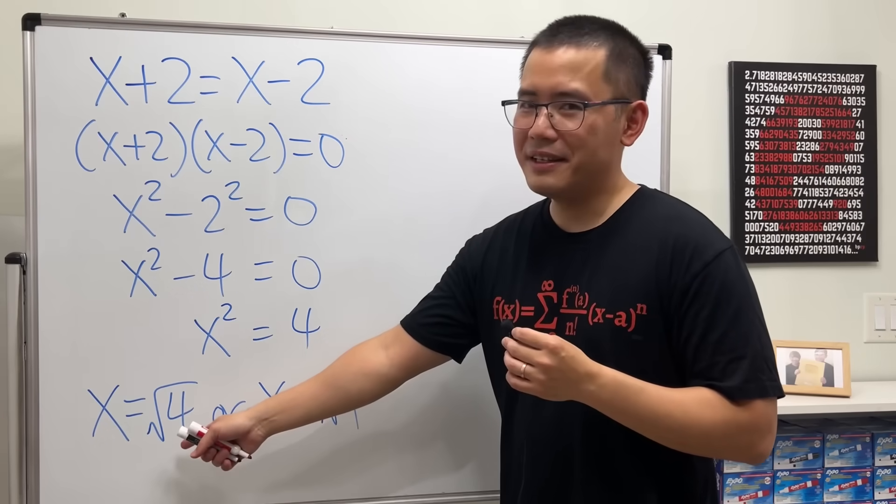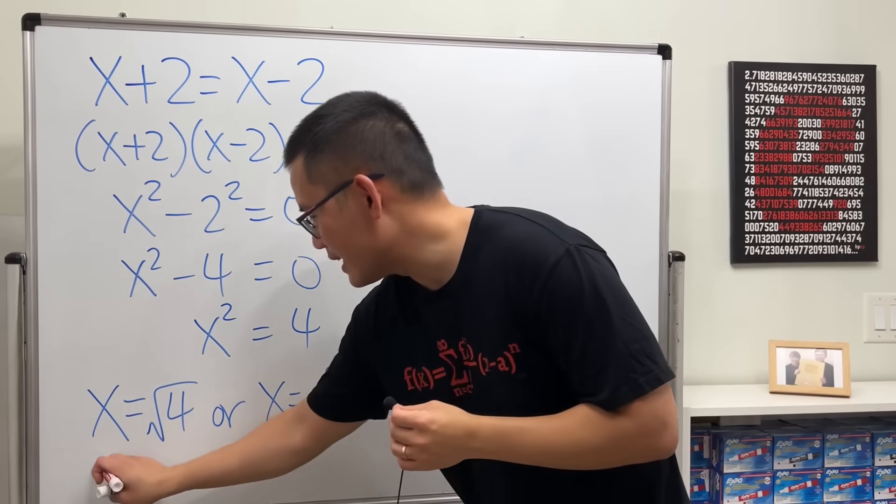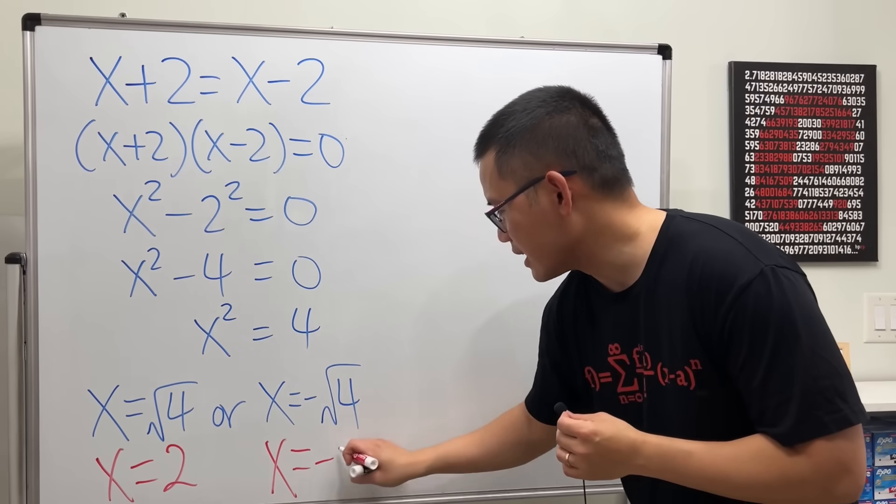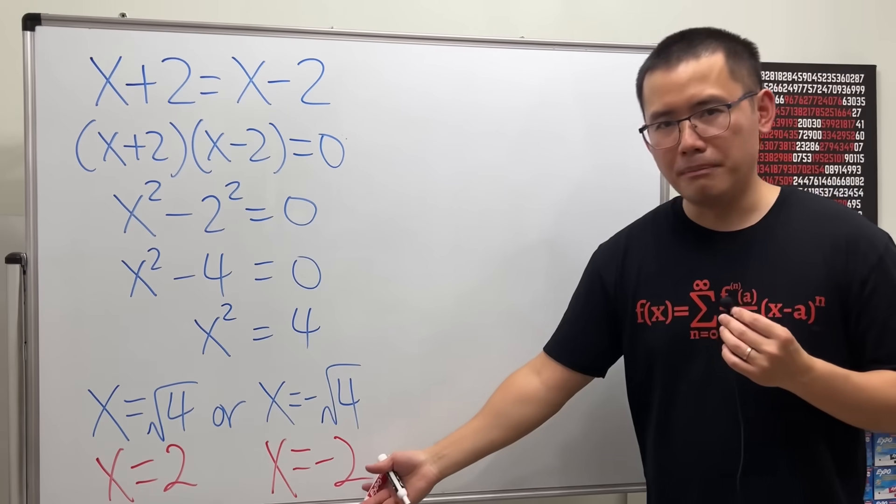With that being said, though, right here, square root of 4, please work that out as 2. And right here, x equals negative 2. But this is not the main issue. The main issue is actually the first step.